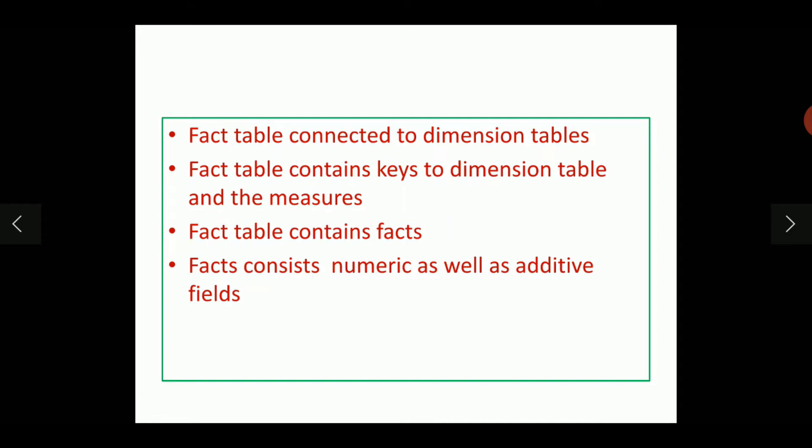The fact table contains the keys and it also contains the measures. The fact table contains the keys to the dimension tables. The primary keys of the dimension tables are included in the fact table as foreign keys. The fact table contains facts. Fact consists of numeric as well as additive fields.